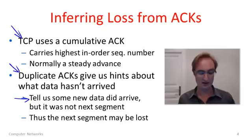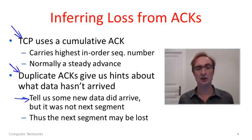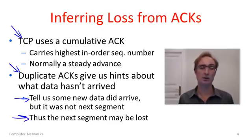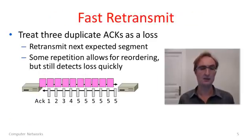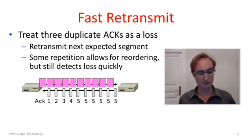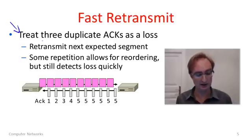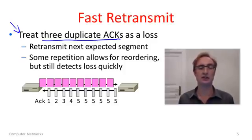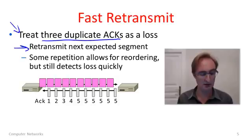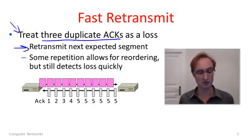Duplicate ACKs give us hints about what data hasn't arrived. Every time we get a duplicate ACK, we know some new data arrived but it wasn't the next expected segment — because if it were, the cumulative ACK number would have risen. So there's a good chance the next segment just beyond the one acknowledged has been lost. The fast retransmit heuristic uses this inference: when the TCP sender receives three duplicate ACKs, it treats this as a loss event and immediately retransmits the next expected segment beyond the cumulative ACK value.